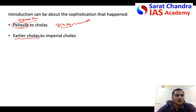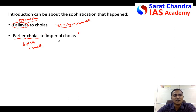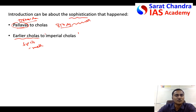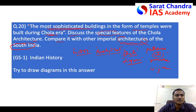You can also say that the earlier Cholas used to build temples with bricks and they were small structures, whereas the later imperial Cholas built colossal buildings - large buildings with large mandapas, large gopurams, fresco paintings, and great big statues. So they reached the most sophisticated forms by around 1080-1090 AD. This can be your introduction, just to explain the statement given in the question.